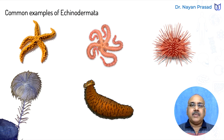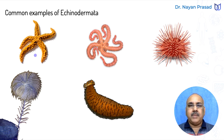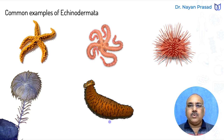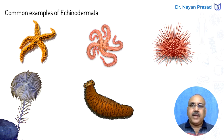Let us see the images of these examples. Here is the sea star, scientific name Asterias, also called starfish. This one is the brittle star. This is the sea urchin, sea lily, and sea cucumber. So these are common examples of Phylum Echinodermata.